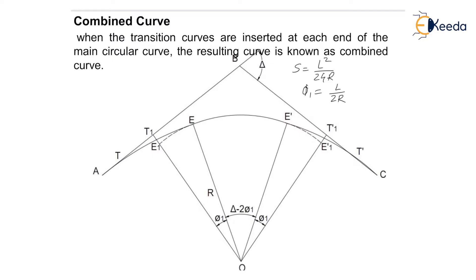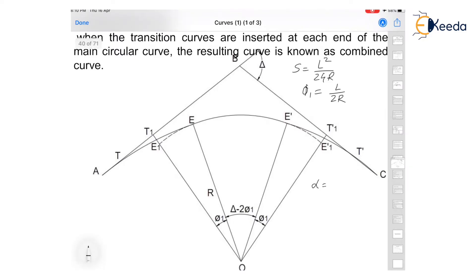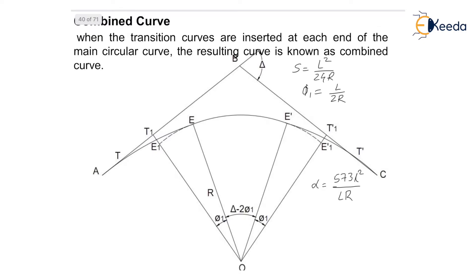After knowing all chain ages, calculate the deflection angle for the transition curve using the formula: alpha = 573 l squared upon LR, where small l is the length of your chord on the transition curve, capital L is the total length of the transition curve, and R is the radius. This gives the answer in minutes.